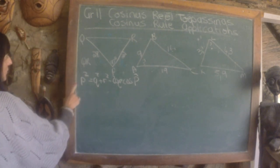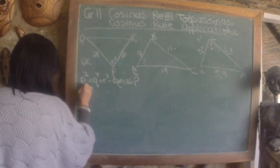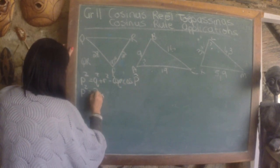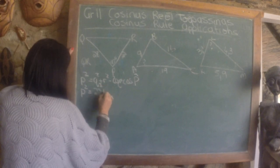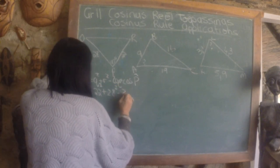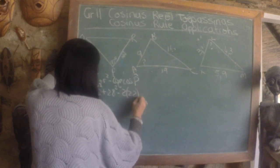Now you can do substitution. We seek p squared. We have q squared. So this 22 squared plus 28 squared minus 2 times 22 times 28.